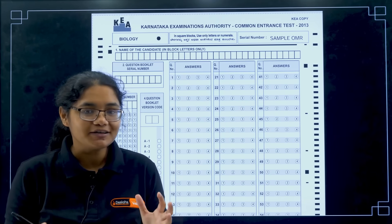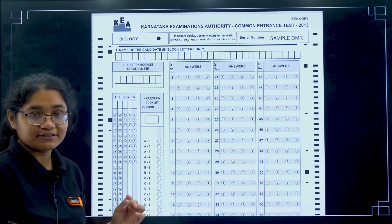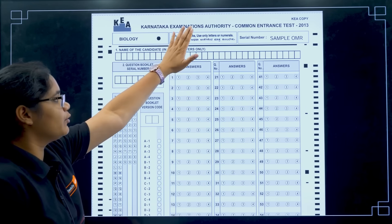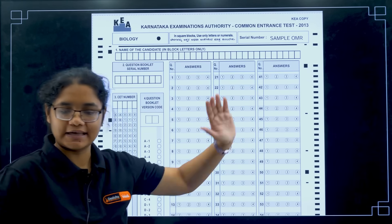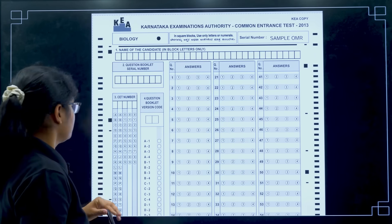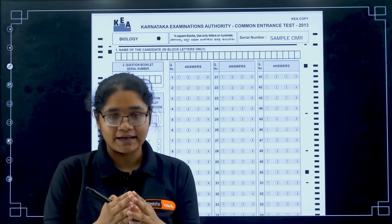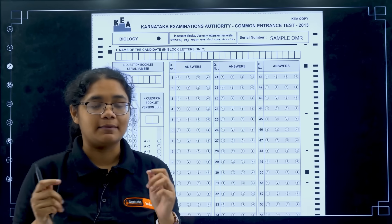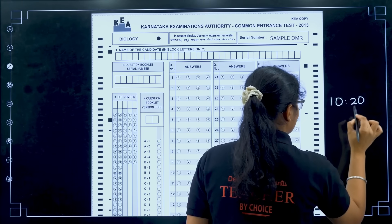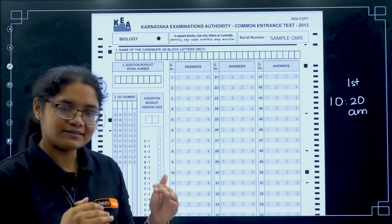This is how your OMR sheet will look in the examination — it will be exactly like this. This is a KEA OMR sheet from 2013 and the same pattern is followed every year, so there will be no change. You will be allowed to enter the examination hall by 10:20 and you will be given this OMR sheet at 10:20 for the first shift. Similarly, 10 minutes before the start in the second shift as well.